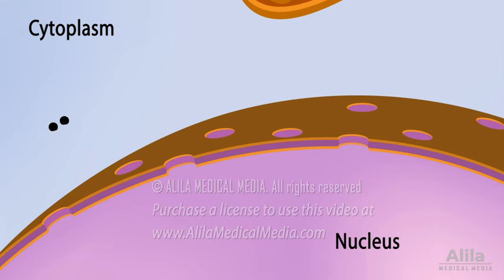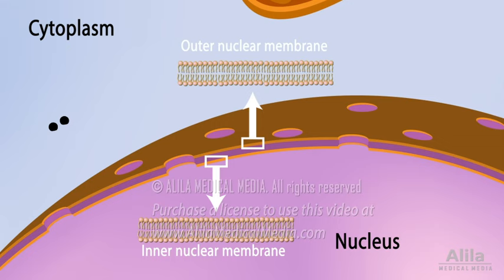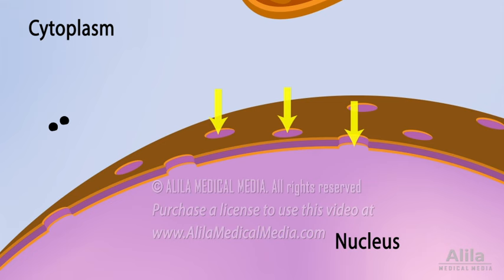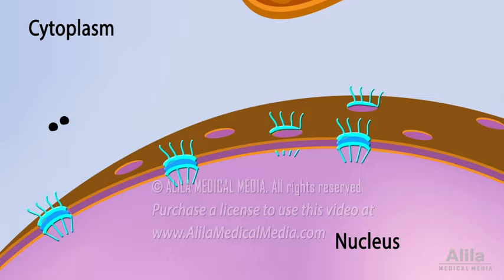The nuclear envelope surrounding the nucleus consists of two membranes — inner and outer — each of which is a phospholipid bilayer. The envelope is dotted with nuclear pores, protein complexes that provide controlled passage between the nucleus and cytoplasm.